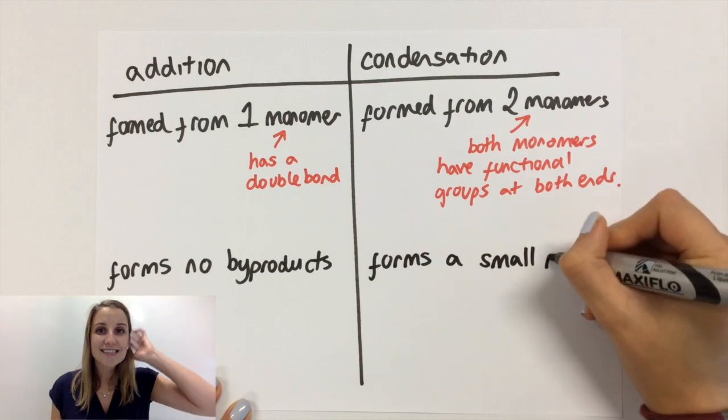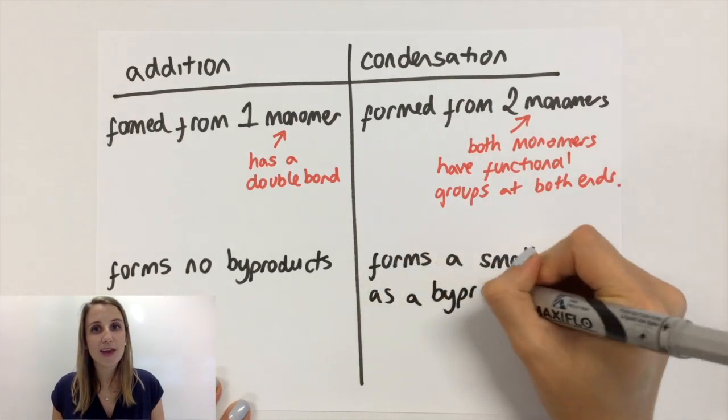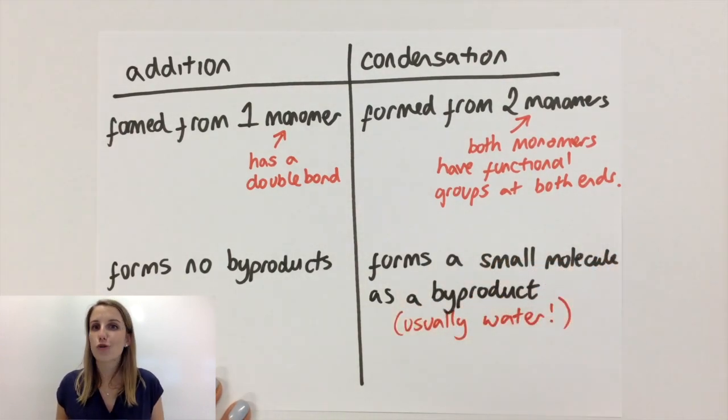Whereas for condensation polymerization, you normally get a small molecule being given out as a byproduct and in GCSE, that's normally water.